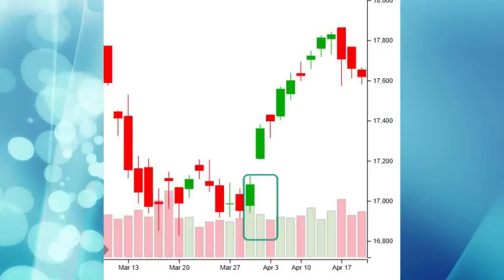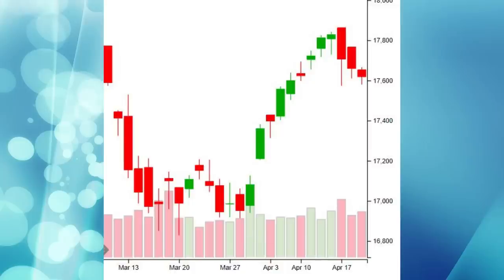For example, a long green candle is likely to have more significance if it forms at a major price support level. Look at the Nifty daily chart between March and April — there are three long green candles that formed at important price support levels: 17,000, 17,200, and 17,400. All indicate strong bullishness and the upside momentum that followed. Similarly, a long red candle with minor upper and lower shadow indicates strong selling pressure.